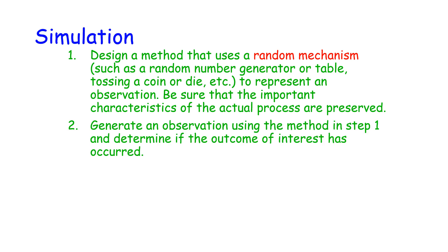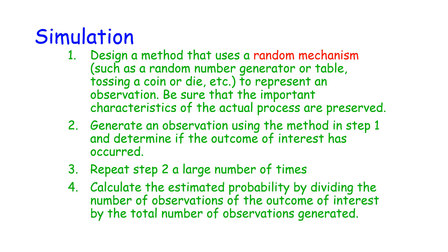Then you're going to generate an observation using the method in step one, and determine if the outcome of interest has occurred. Then you're going to repeat the second step a large number of times. Finally, calculate the estimated probability by dividing the number of observations of the outcome of interest by the total number of observations generated.